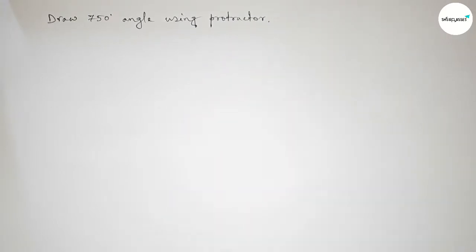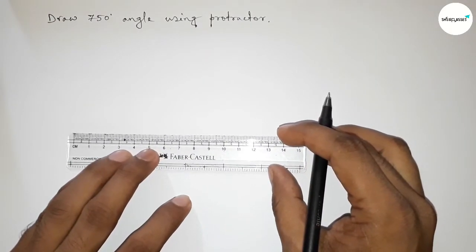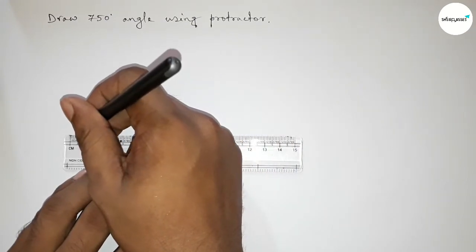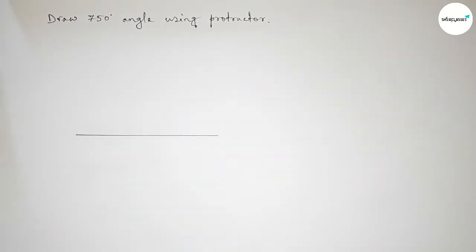First of all, we have to draw a line of any length. Drawing here a line and taking here point B and here C. Now roughly discussing some important calculations here.